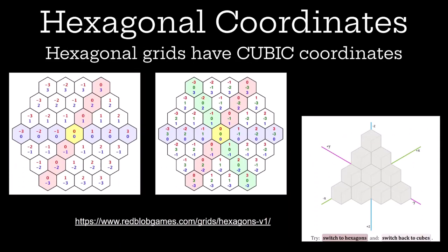The next thing is hexagonal coordinates. These are a really fun interesting little rabbit hole in and of themselves, and there are actually many different ways to coordinate a hexagonal grid. The way we're going to be doing it is by having cubic coordinates, so actually having an x, y, and z axis. A fun property of this version of hexagonal coordinates is you can always add every coordinate to get back to zero.